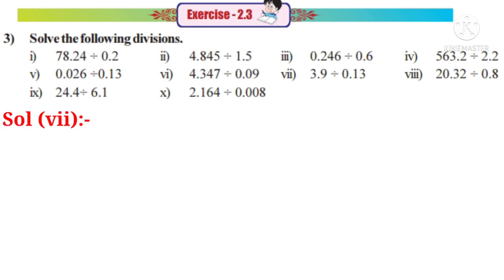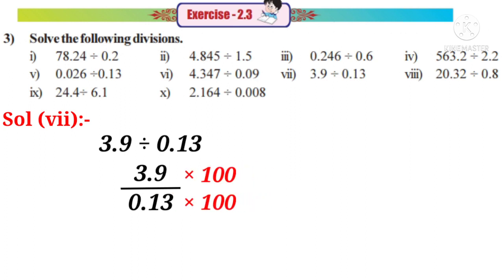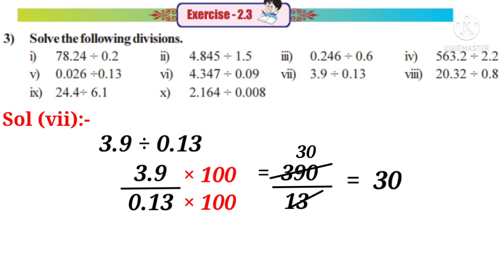Solution 7: 3.9 divided by 0.13, that means 3.9 by 0.13. Observe that there are 2 decimal places in the denominator. So we have to multiply with a number which has 2 zeros after 1, that is by 100. The decimal point will shift right side after two digits. So it becomes 390 by denominator becomes 13. On simplification by 13, the answer is 30.